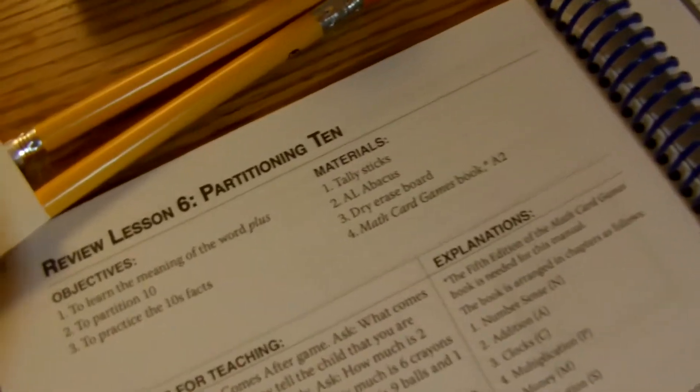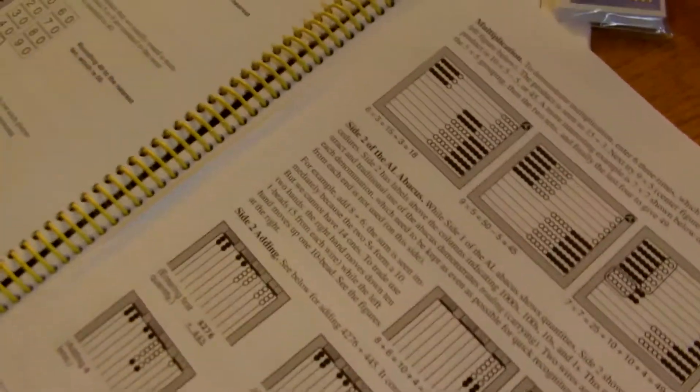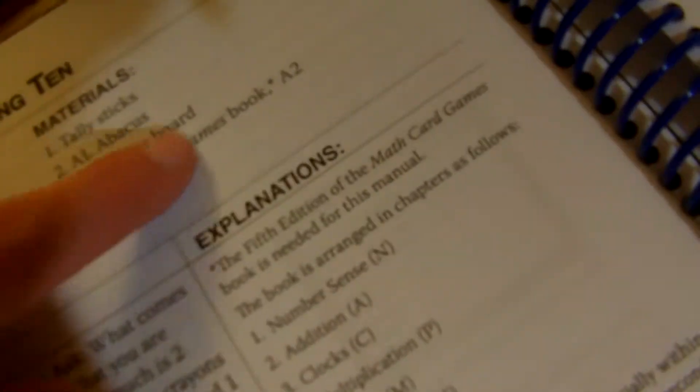So, now we're doing lesson six, and we get to use one of our math card games. It's a little tricky because some of the activities, when they tell you where in the book it is, it's not as easy to find. It's easy, it's just to go in the index and find the one you're looking for, and then find the page.